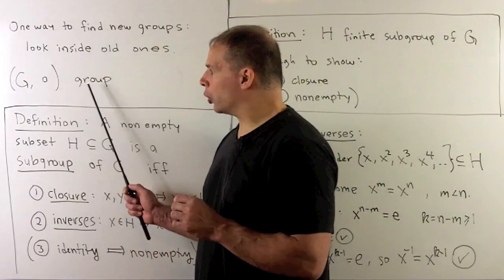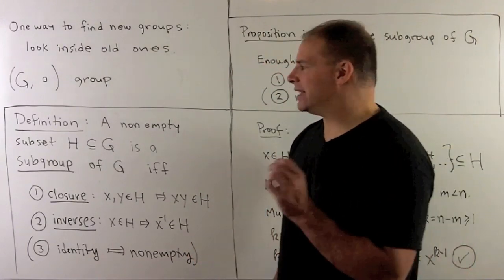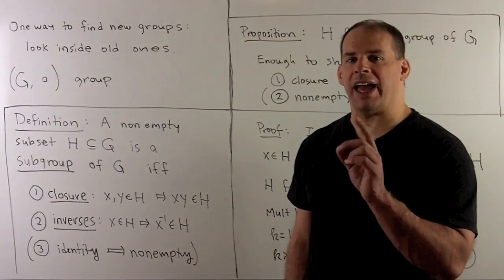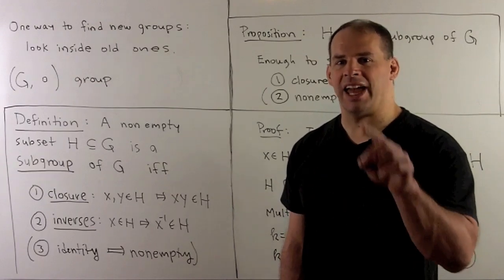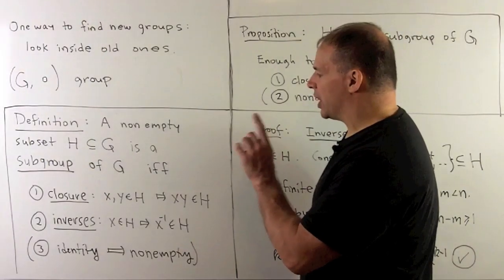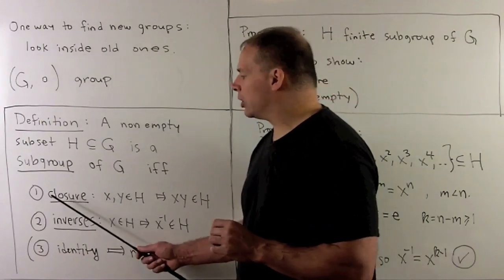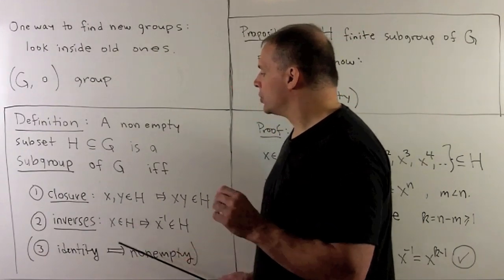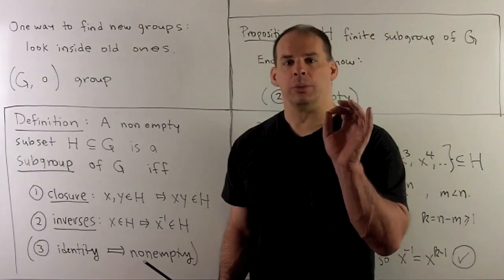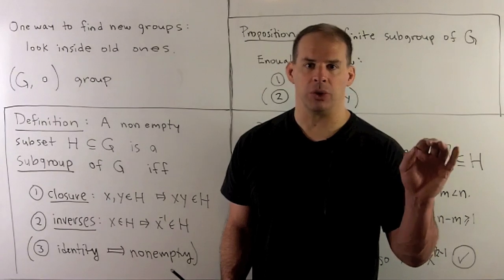We'll let G be a group under multiplication, which we'll omit when writing things out. A non-empty subset H of G is called a subgroup of G if H is a group contained inside G. For the definition, we need four properties for H to be a group. First, H must be closed under multiplication: if X and Y are in H, then their product is in H. Second is associativity, but since H is a subset of G, we get that for free.